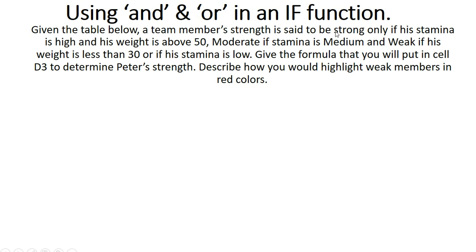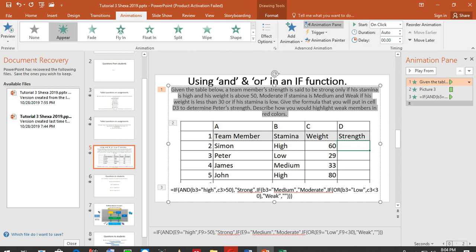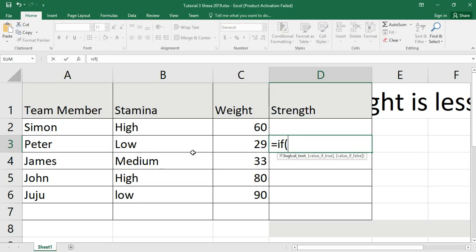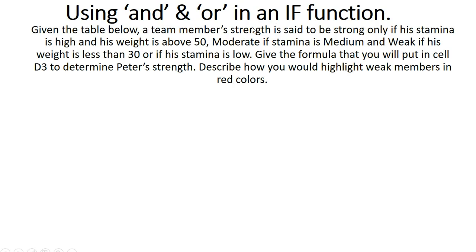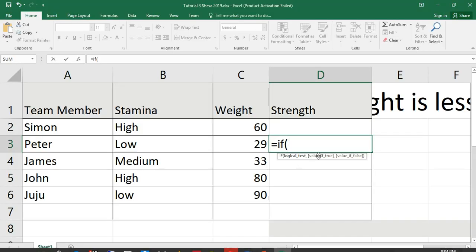Our question is saying a team member's strength is said to be strong if his stamina is high and his weight is above 50. So we need to check weight and stamina — we have two columns to check. We go back to Excel and say stamina and weight. These two conditions need to be true for a person to be considered strong, so we need to put an AND.